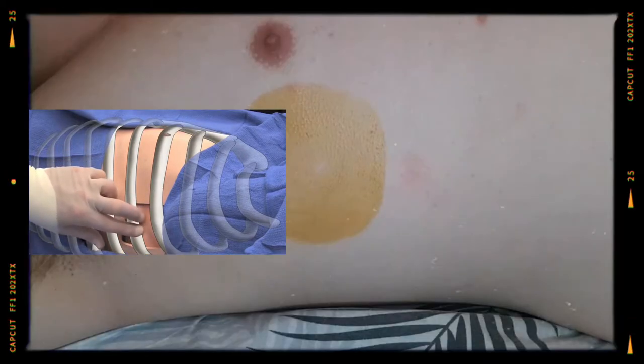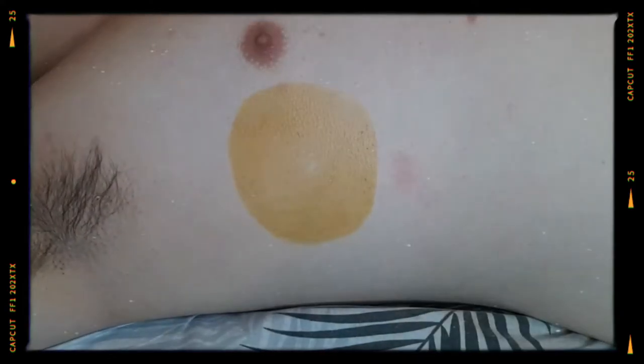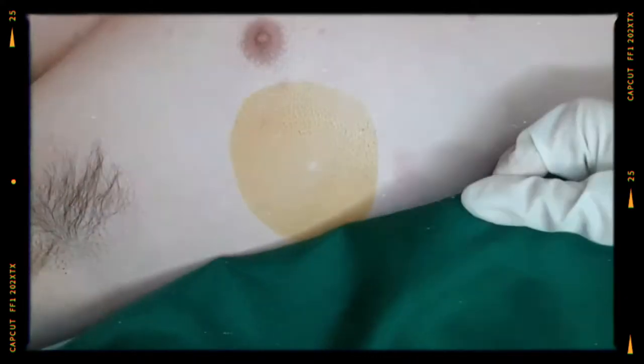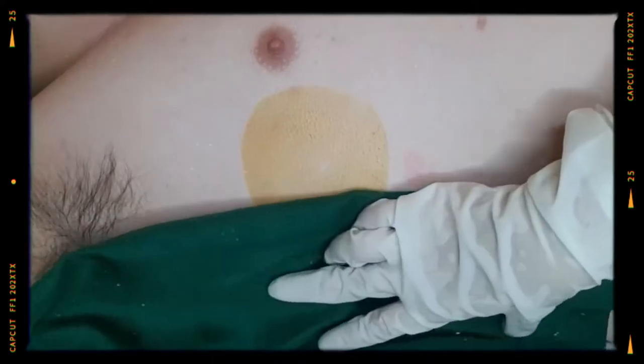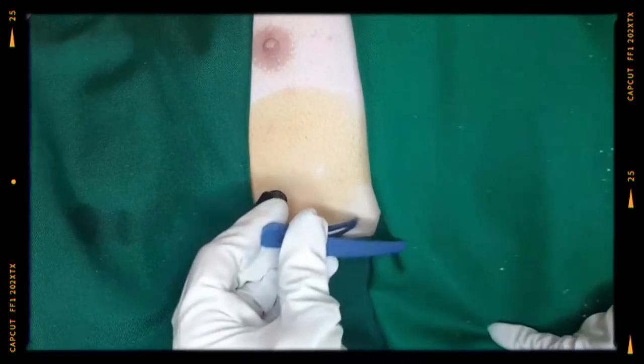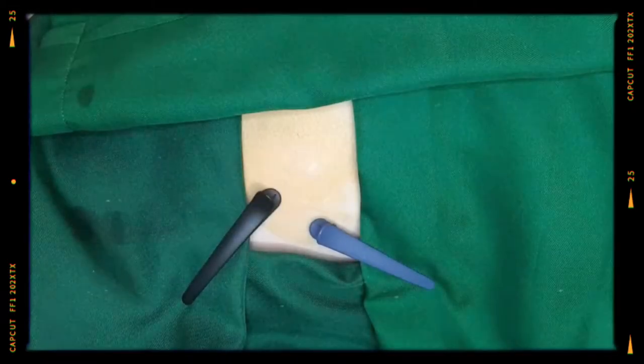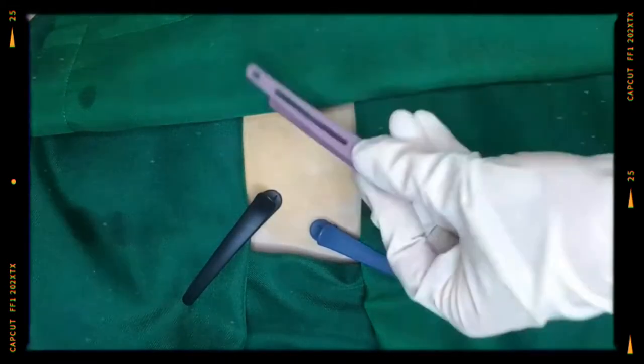Next, we drape the area with four towels, not with a single fenestrated sheet. Drape first at the site of the surgeon, then place the other towels, cephalad and caudad. And the last towel should be placed at the opposite side of the surgeon. Secure the towel with towel clips.